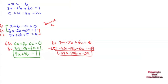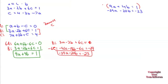The two linear equations we came up with are 9a plus 4b equals 1 and negative 39a minus 20b equals negative 23. They're not friendly, so let's do elimination. To get rid of b, multiply the top by 5 and leave the bottom alone: that gives 45a plus 20b equals 5.